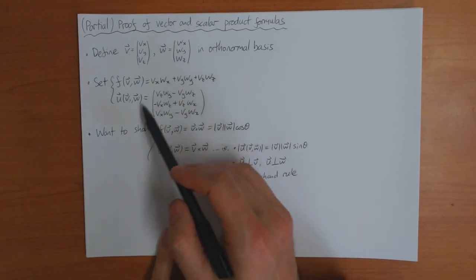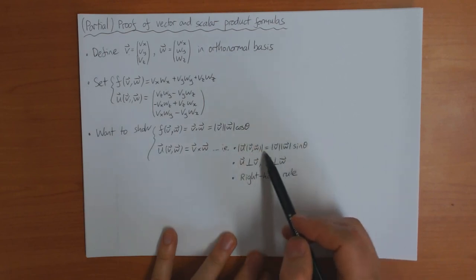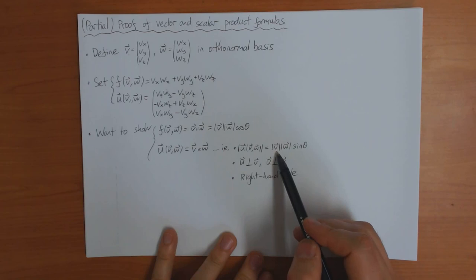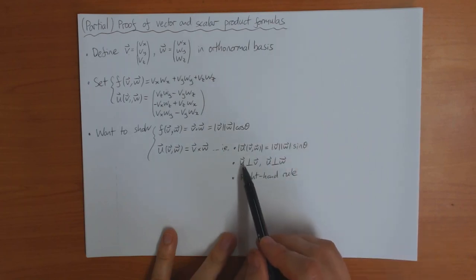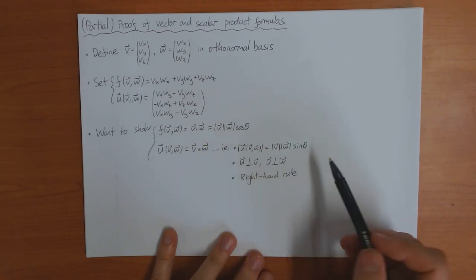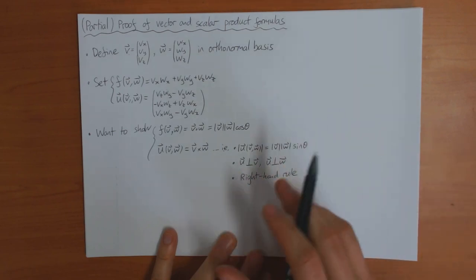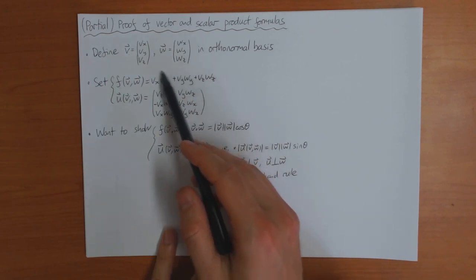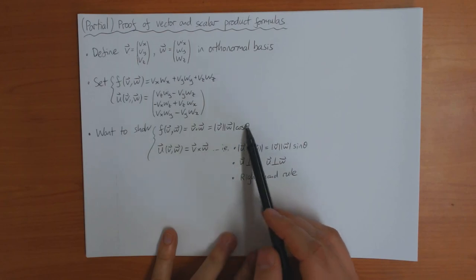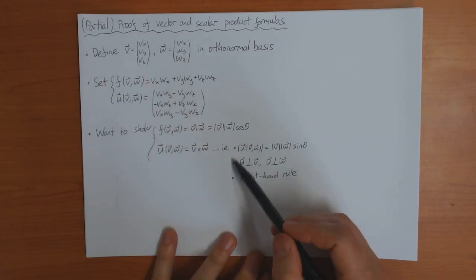And I want to show that this function here is equal to the vector product. In other words, I want to show that its length is length v, length w, sin theta, that it's perpendicular to v and w, and that it satisfies this right-hand rule. So I want to show that this is equal to this and that this satisfies these three properties.